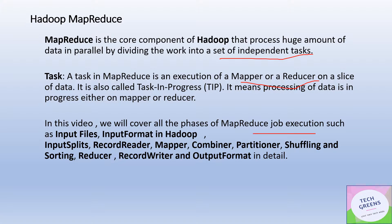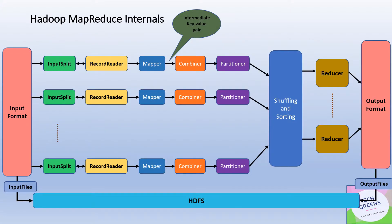In this video we'll cover all the phases of MapReduce job execution: input files, how they are read from HDFS; input formats in Hadoop; how input splits are created; Record Reader; Mapper; Combiner; Partitioner; shuffling and sorting; Reducer; Record Writer; and finally how the output file is produced in the output format.